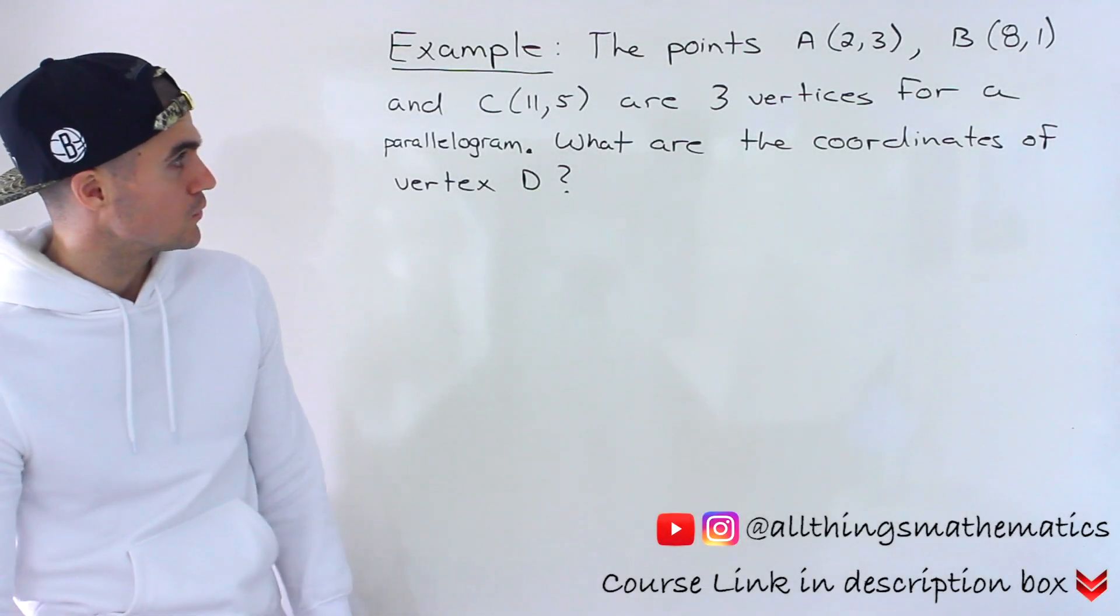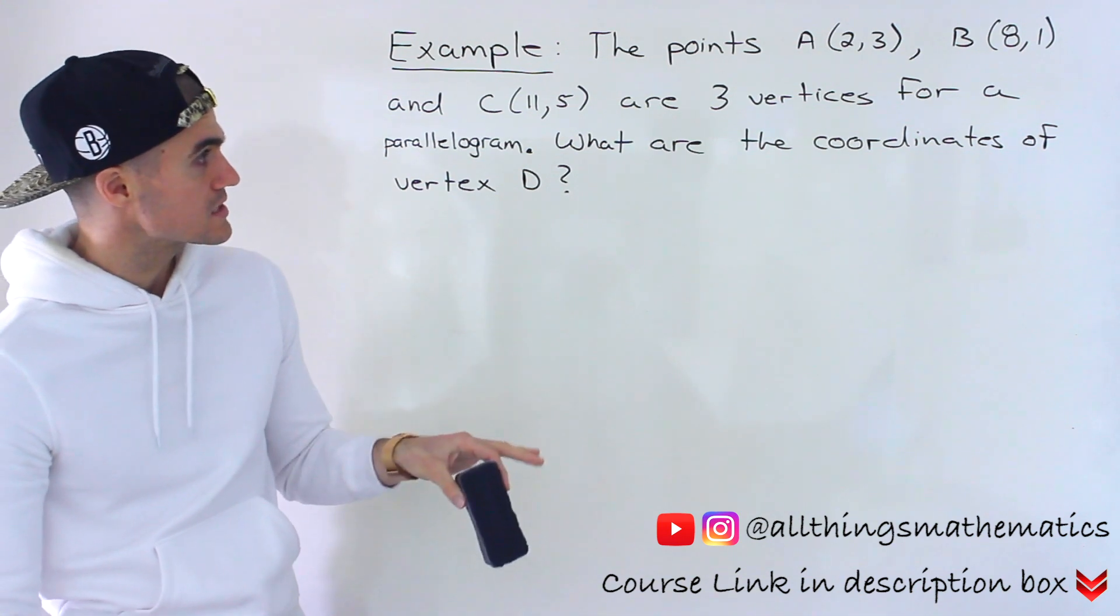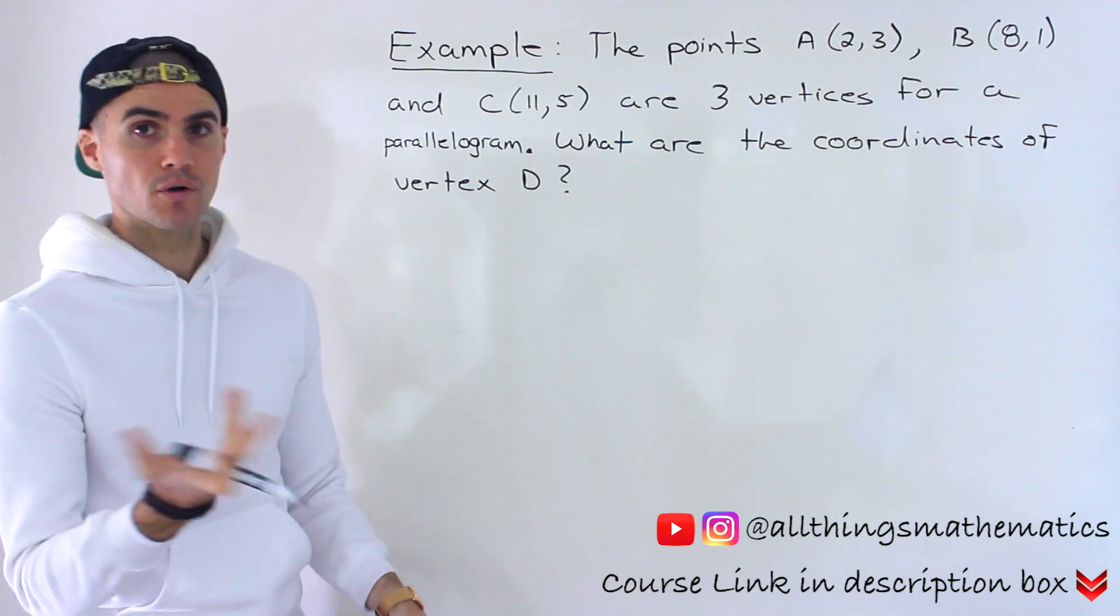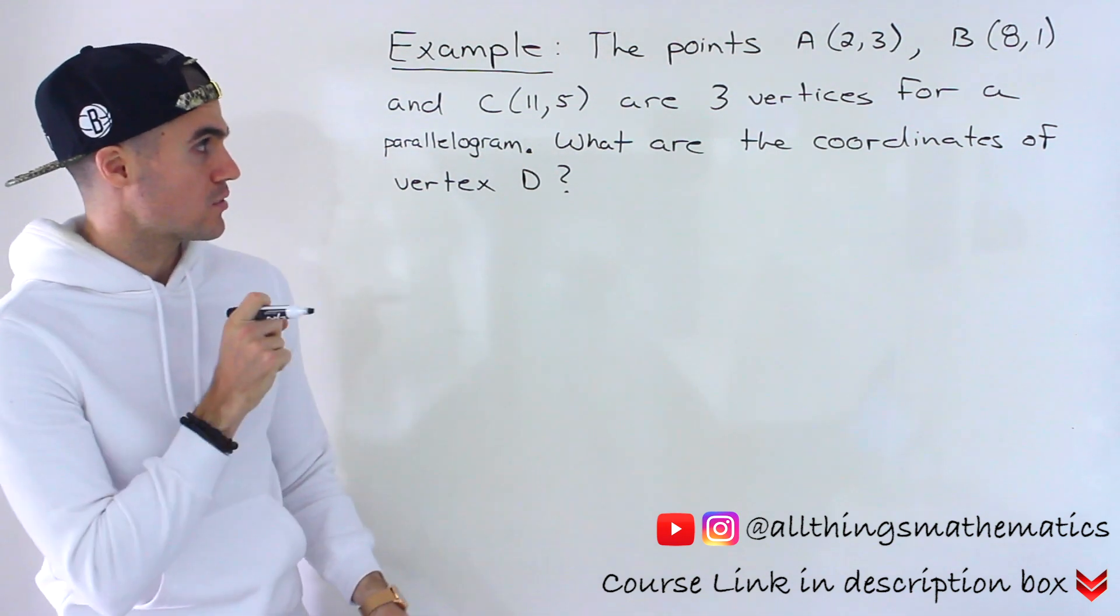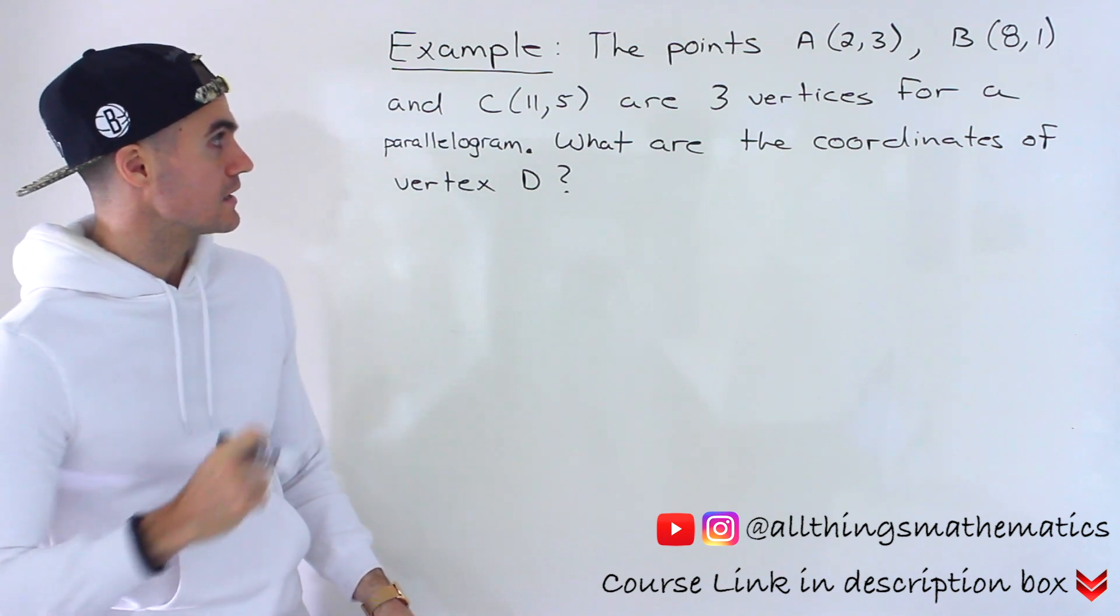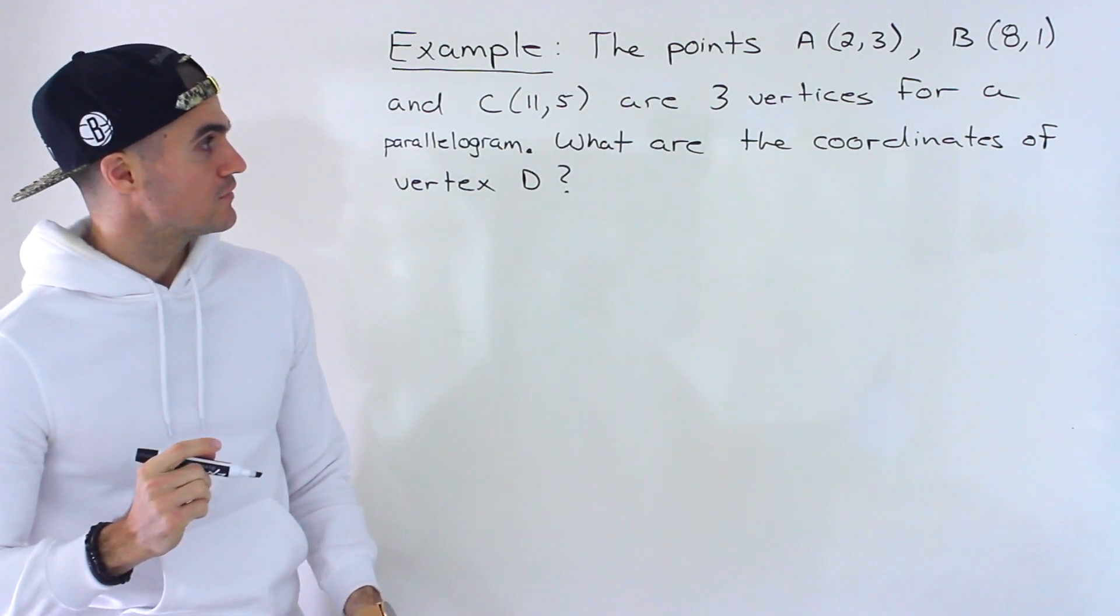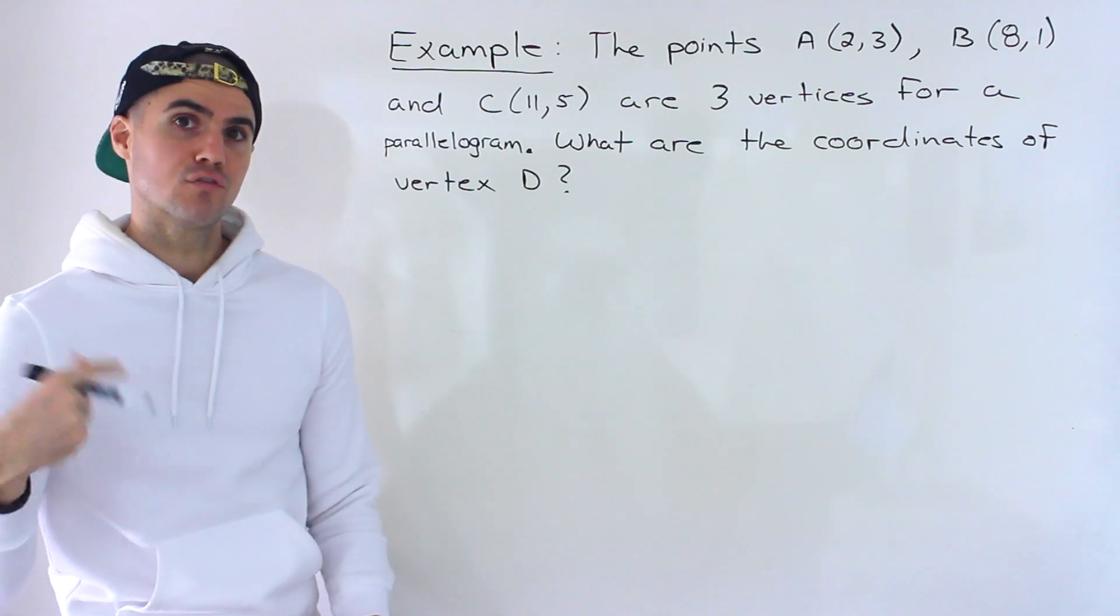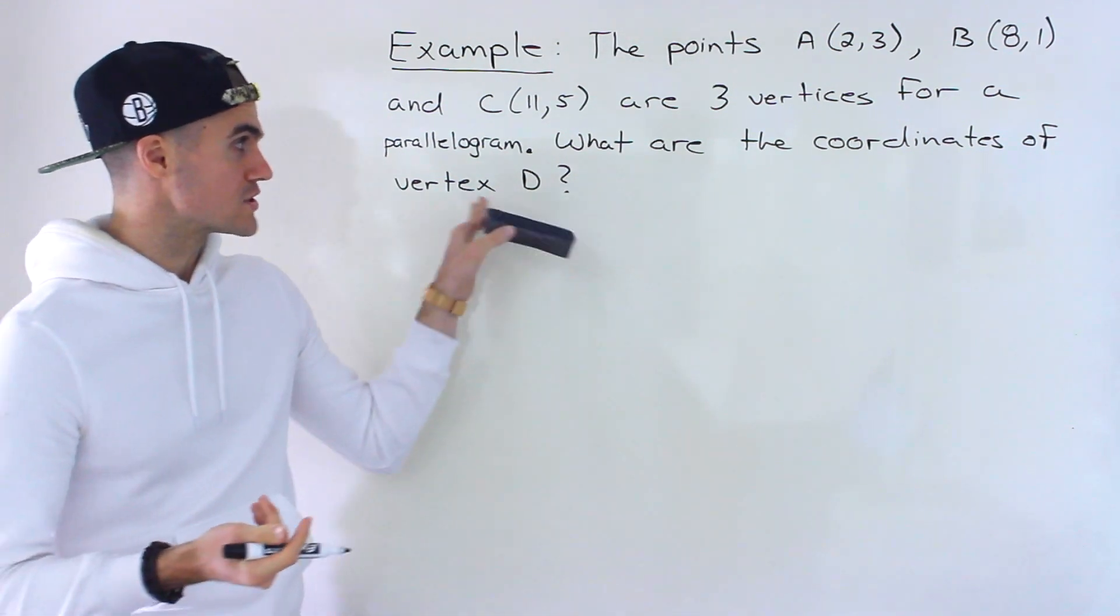Moving on to the next question. We are given three points as the vertices for a parallelogram. So we have A(2,3), B(8,1), and C(11,5). And then we have to find the coordinates of the fourth vertex, vertex D.